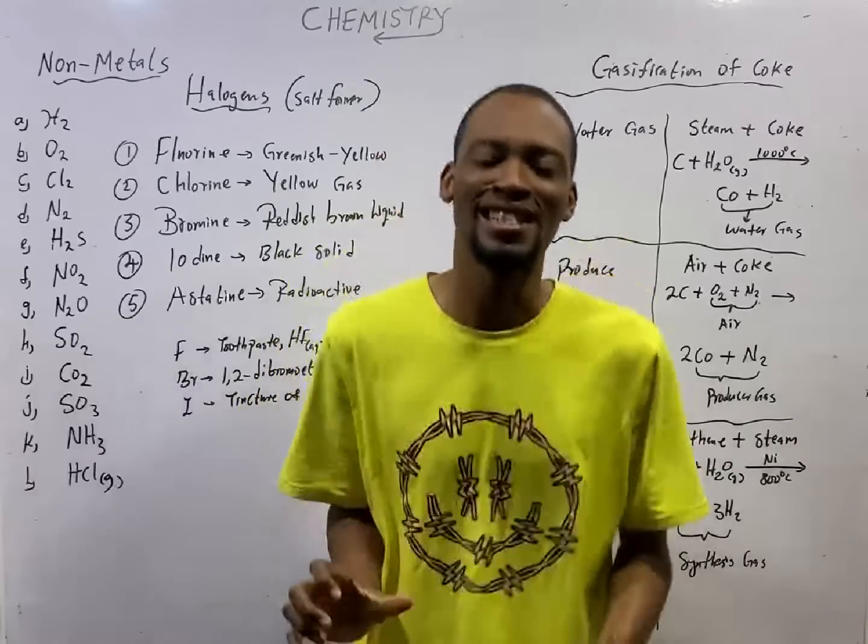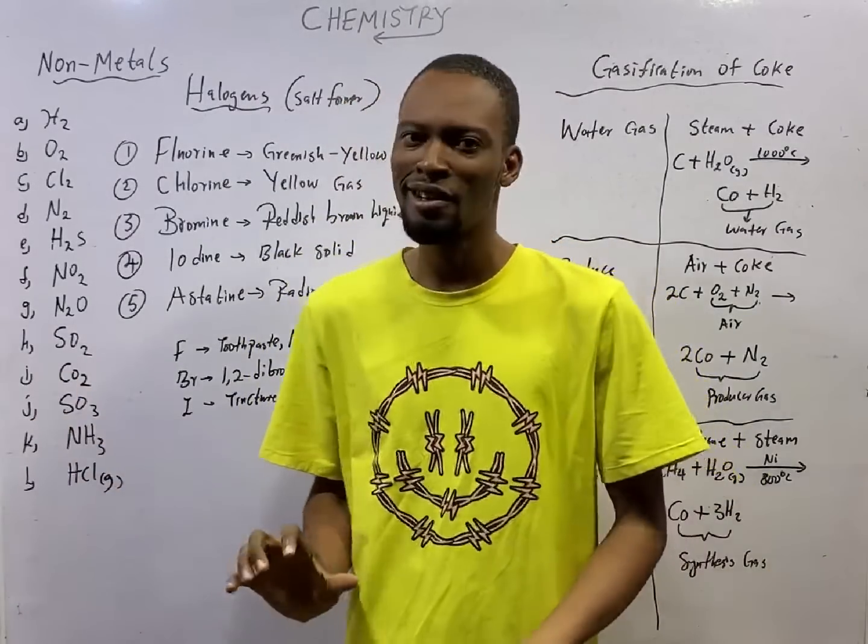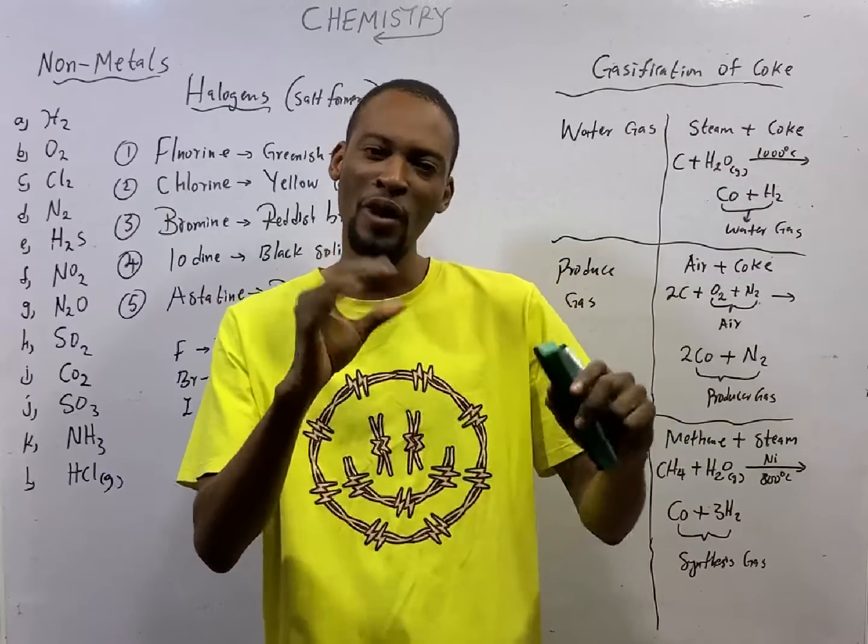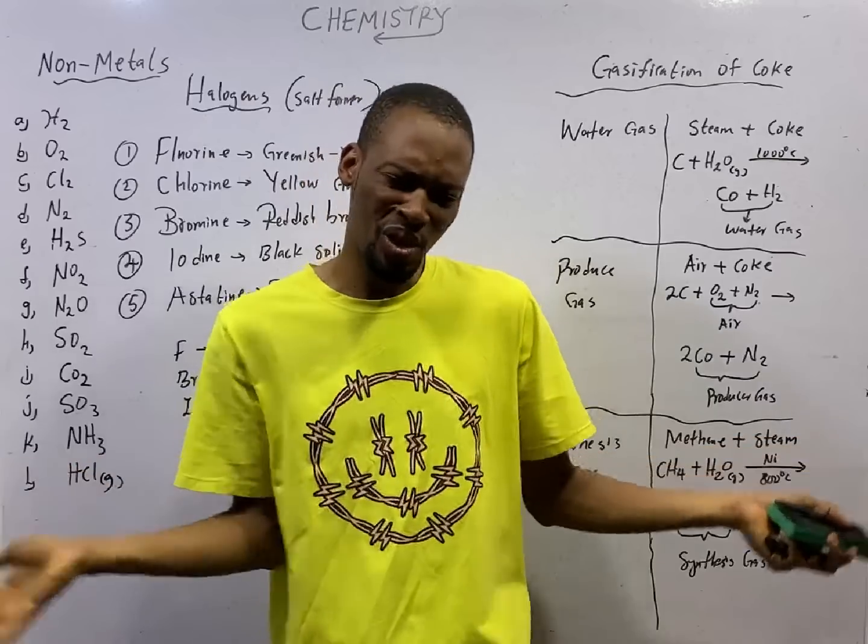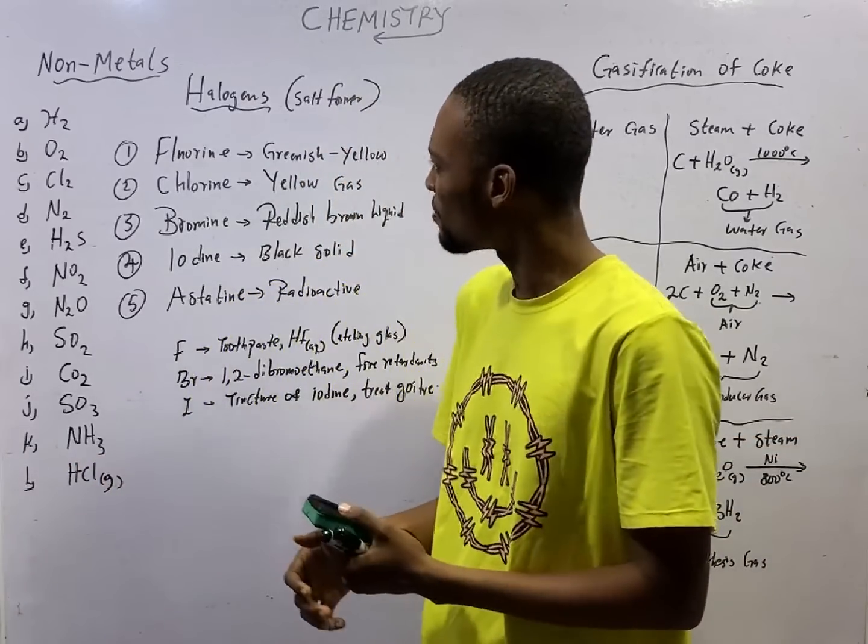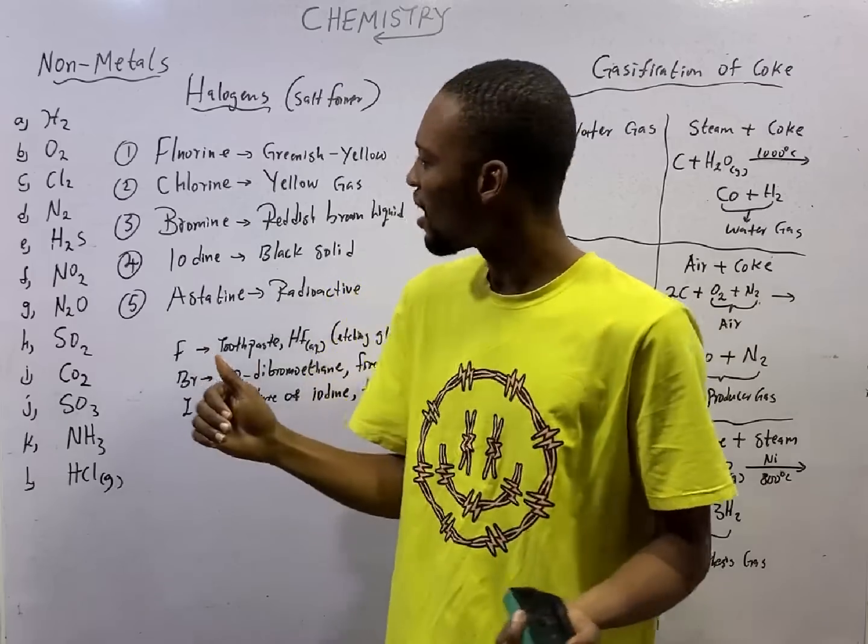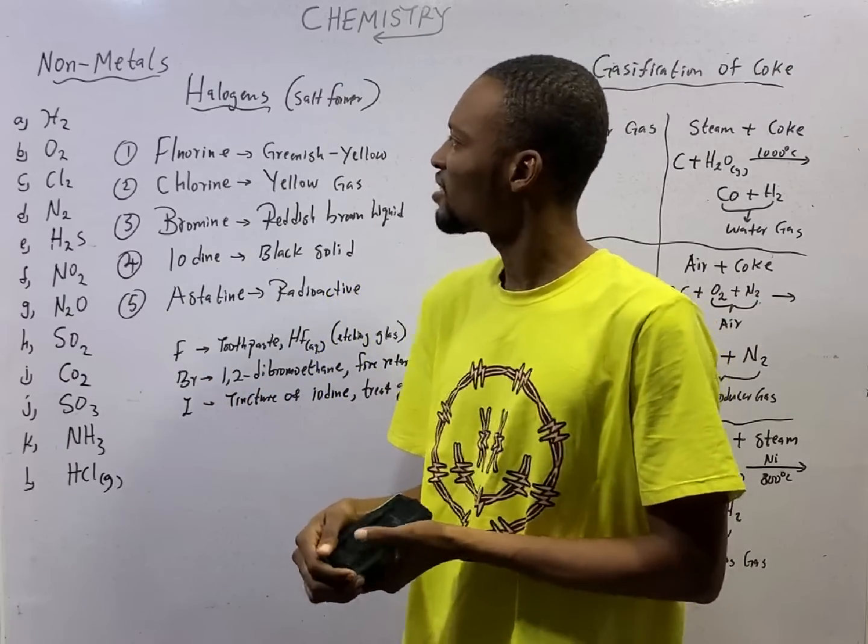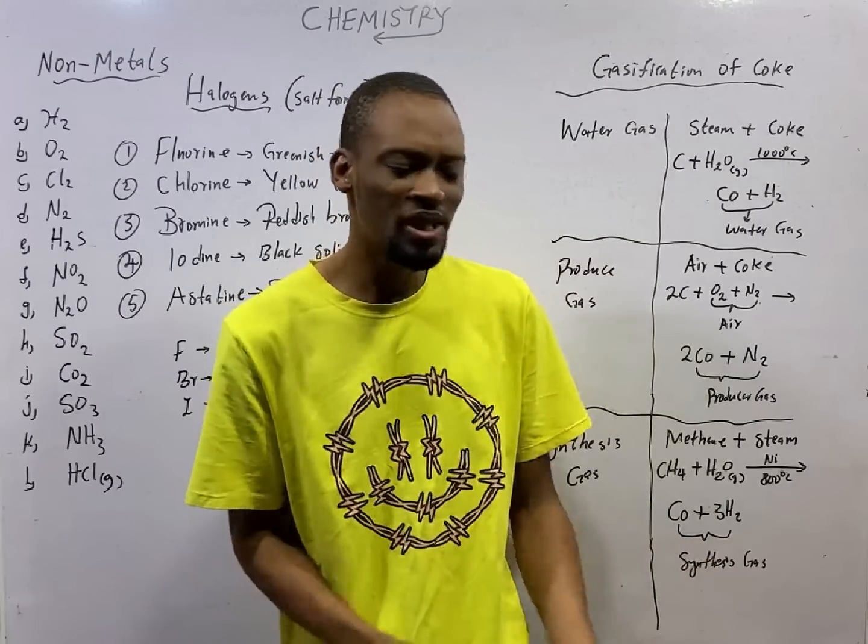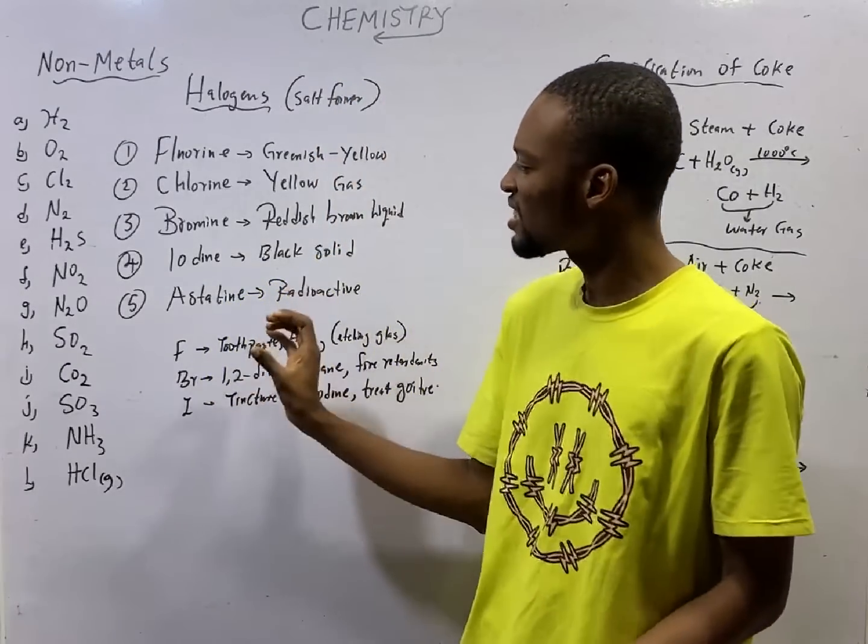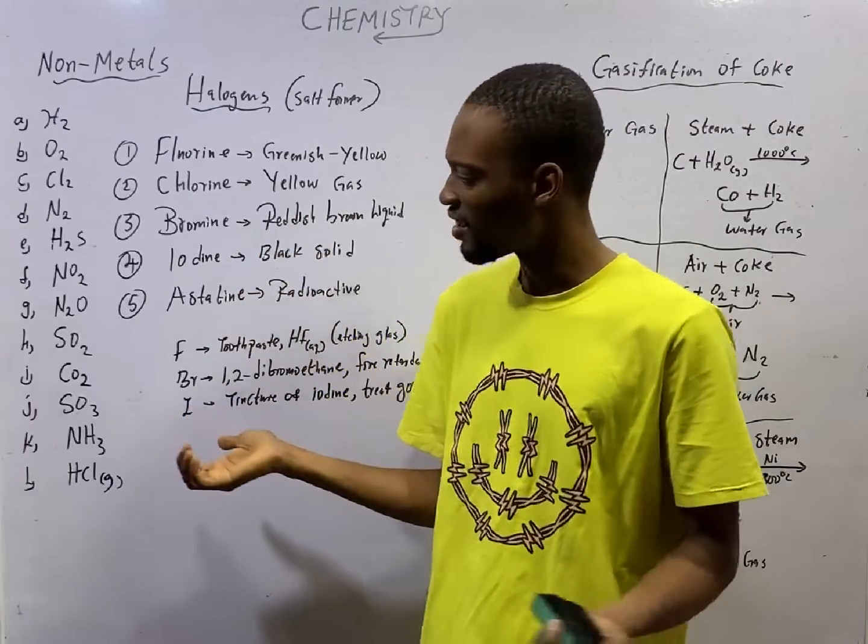This is episode number 60 of the 120 days to JAMB chemistry with Flash Isaac. We started from the bottom, now we are at the first half, which means 60 more to go. That sounds amazing, that looks amazing, and that feels amazing. It has been an interesting journey so far, and the good news is that this episode 60 will be the end of non-metals and their compounds.